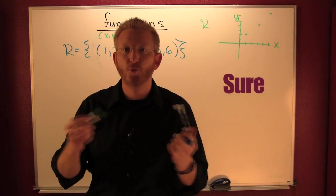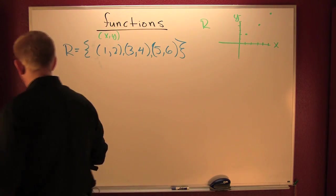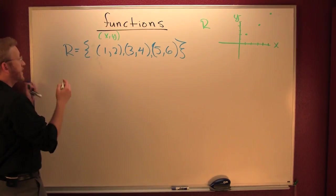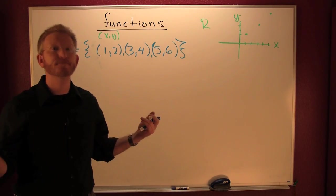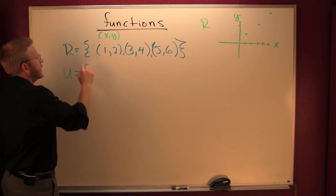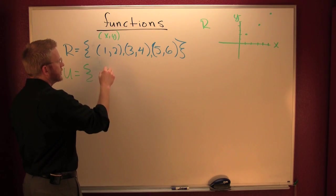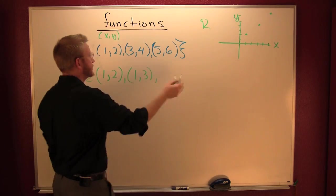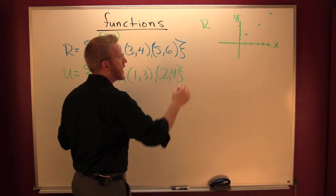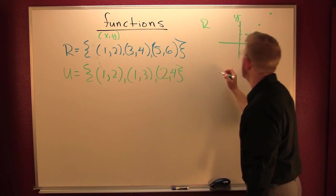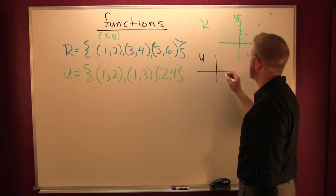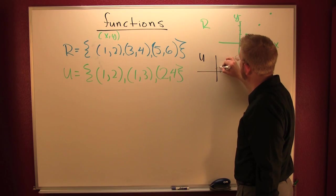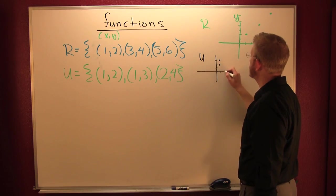So we plotted that relation. Let's get another relation — let's call it U. We'll use the ordered pairs: (1,2), (1,3), and (2,4). If we were going to plot relation U, one would relate to both two and three, and two would relate to four.